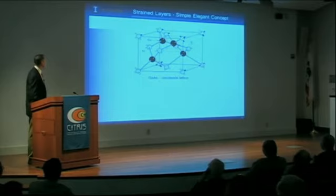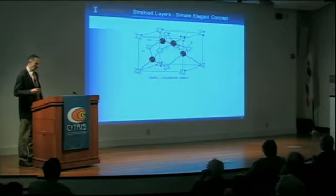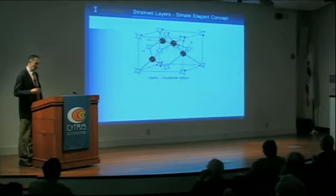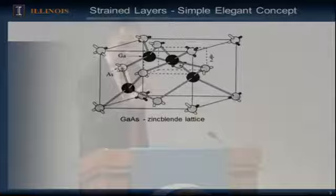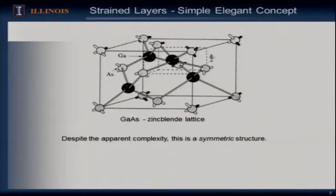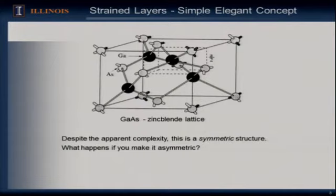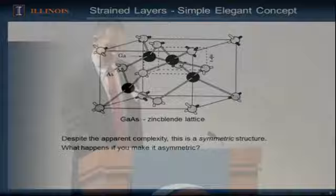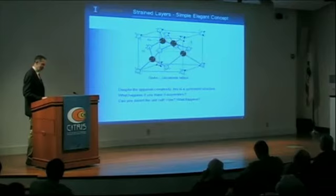The concept of strain layers is really a very simple but, given the historical context, a very elegant concept. We all learn in the first few days of graduate school what this looked like and realize that despite its apparent complexity, this is a symmetric structure. Really until we started talking about strain layers in the third or fourth decade of semiconductor research, everything prior to that was constrained by the symmetry. Eli asked the question: what happens if you make it asymmetric?